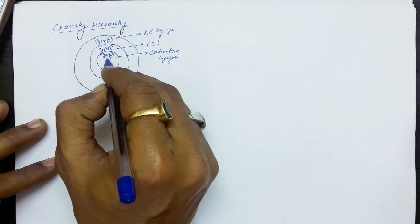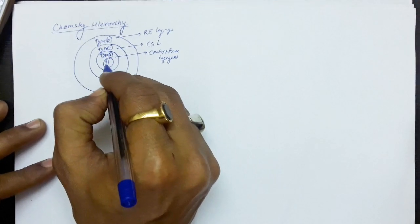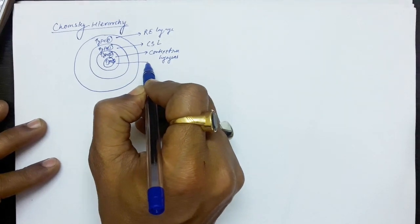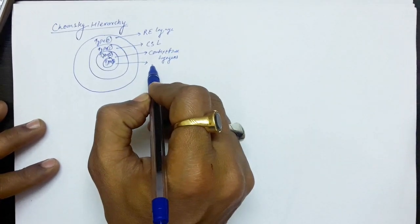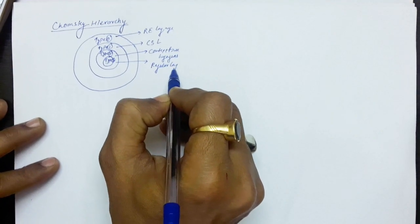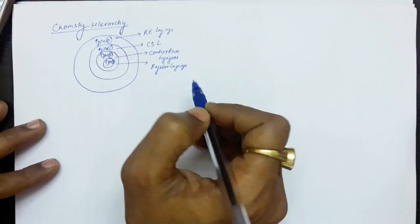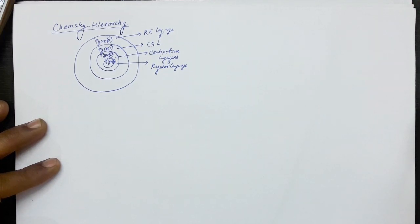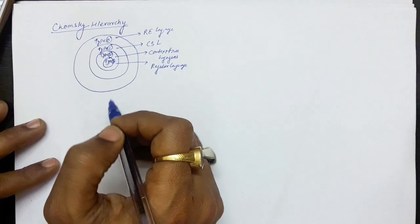A subset of Type 2 is Type 3 grammar, which defines the Type 3 language — the regular language. So the bigger set is Type 0 with no restriction. Once we apply restriction it becomes Type 1; more restriction gives Type 2; even more restriction gives Type 3.